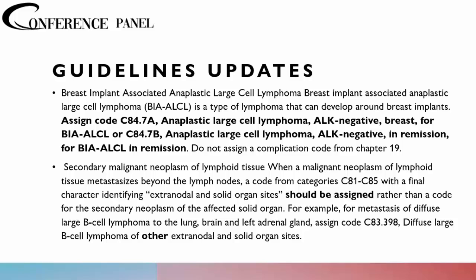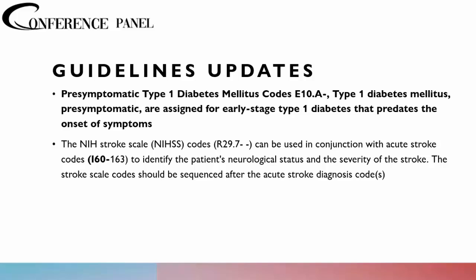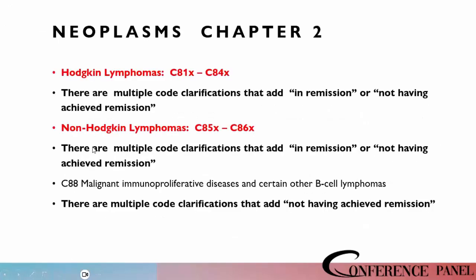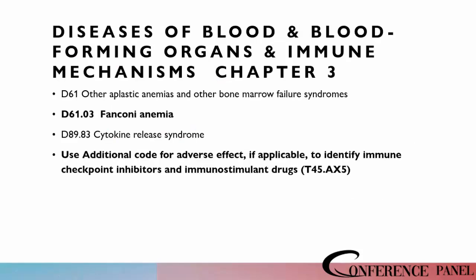You will see quite a number of changes in the arena of lymphoma. So let's take a look at this pretty long list of codes. We're going to see this breakdown between Hodgkin's lymphoma that will be in the C81 through C84 category.